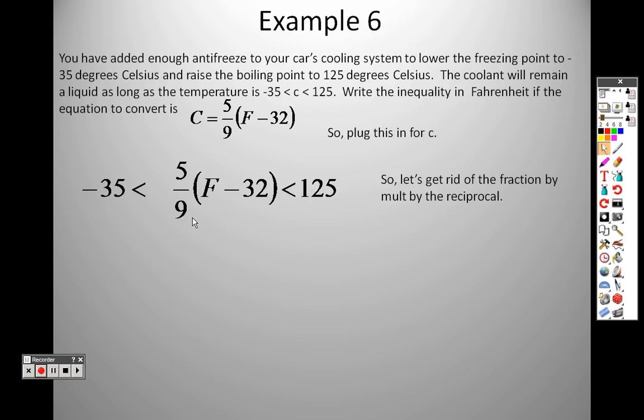Okay, so what I'm going to do here is, I am going to get rid of that fraction. So to get rid of that fraction, I am going to multiply by the reciprocal on both sides. Since it's 5 over 9, I'm going to multiply by 9 over 5. But since I'm multiplying by 9 over 5, I have to do it to both sides. So that cancels out. So all I have left in the center is F minus 32. 9 over 5 times negative 35 is negative 63. 125 times 9 over 5 is 225.